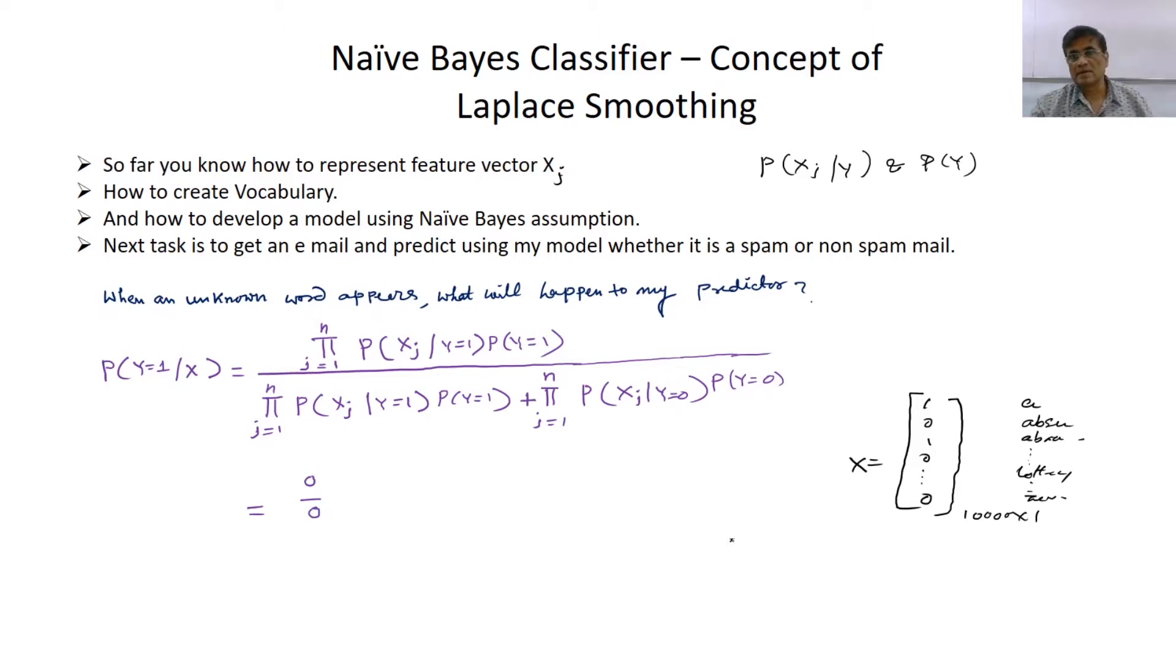We are taking the example from the earlier class of designing a spam filter. In the process of developing the model, you see that there are probabilities which are multiplied. Now suppose I have a vocabulary of 10,000 words and with some 5,000 words I have trained my model, and now I am using it for prediction.